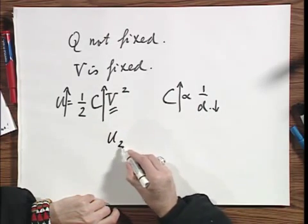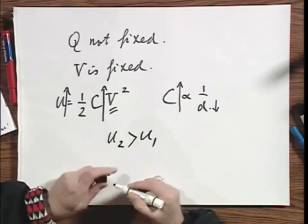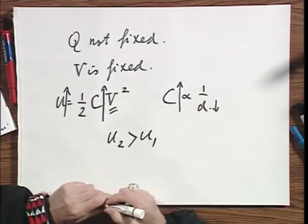So now, with a smaller distance, U2 is now larger than U1. So the situation is exactly reversed.